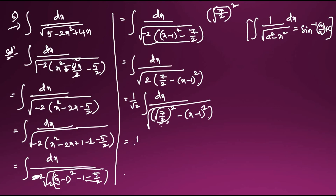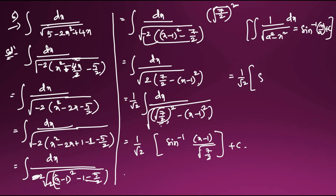Applying the formula: (1/√2)·sin⁻¹((x - 1)/√(7/2)) + C. Simplifying √(7/2): dividing by it means multiplying by √(2/7), so the answer is (1/√2)·sin⁻¹(√2·(x-1)/√7) + C. This is the end of the sixth question.